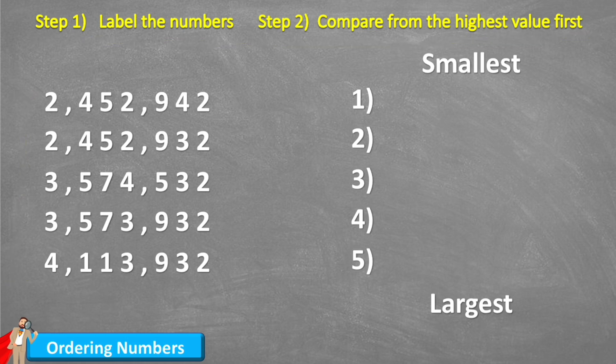So step one says label your numbers. What does that mean? Well, every number sits in a place value column. In this case, starting with our ones, then our tens, our hundreds, then we have thousands, ten thousands, hundred thousands, and we actually have millions as well.